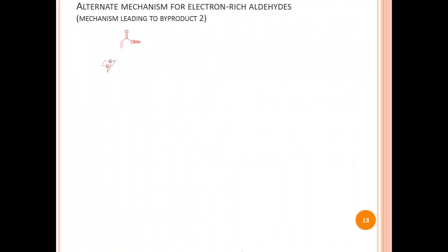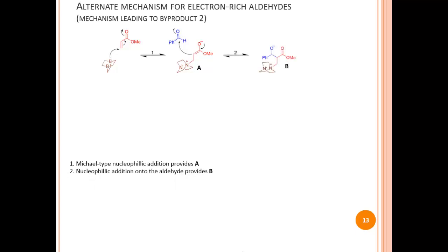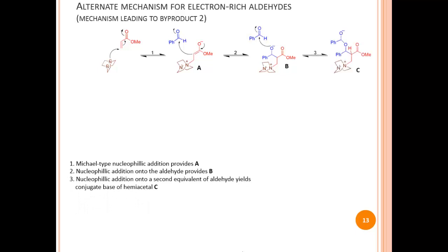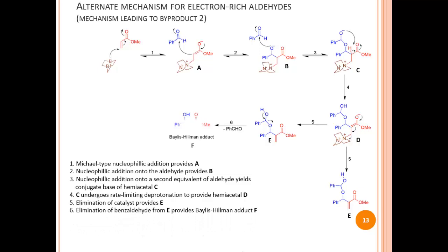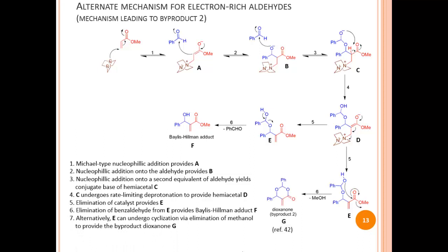For byproduct 2, the dioxinone: Michael-type nucleophilic addition provides zwitterionic enolate A. Nucleophilic addition onto an aldehyde provides zwitterion B. Nucleophilic addition onto a second equivalent of aldehyde yields the conjugate base of hemiacetal C. C undergoes rate-limiting deprotonation to provide hemiacetal D, and elimination of the catalyst provides E. In an alternate route to the Bayliss-Hillman adduct, elimination of benzaldehyde from E provides F. Alternatively, E can undergo cyclization via elimination of methanol to provide the byproduct dioxinone G.